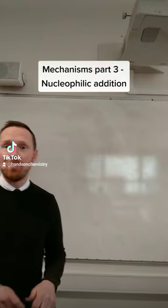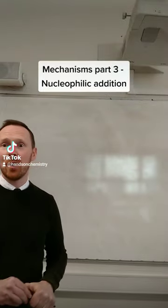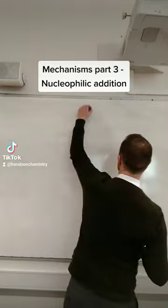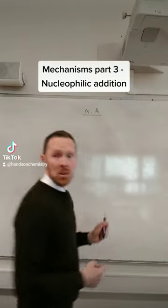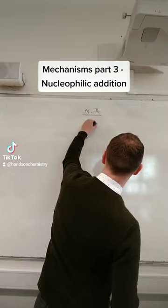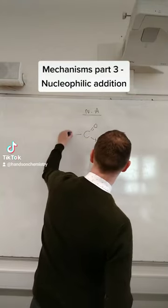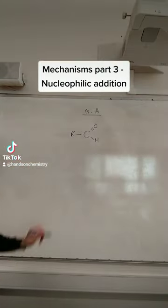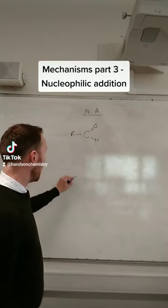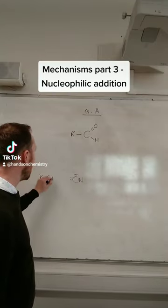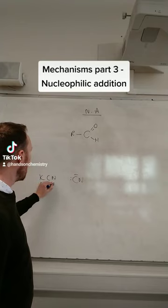We're going through nucleophilic conditions — this is the third one in the series. Straight away we're looking for carbonyl ions, probably going for an aldehyde or a ketone. I'm going to go for an aldehyde here. What are we going to react it with? We're going to react it with a nucleophile. Cyanide can come from potassium cyanide, sodium cyanide, or hydrogen cyanide.